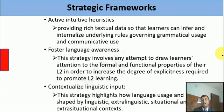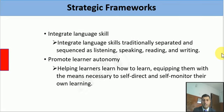The fourth macro strategy is to activate intuitive heuristics — the teacher provides texts rich in both grammatical usage and communicative use. The fifth is to foster language awareness, drawing learners' attention to formal and functional properties of the target language to increase explicitness and promote learning. The sixth is to contextualize linguistic input, highlighting how language is shaped by linguistic, extralinguistic, and situational context — making classroom interaction meaningful. The seventh is to integrate language skills, teaching listening, speaking, reading, and writing integratively rather than separately.